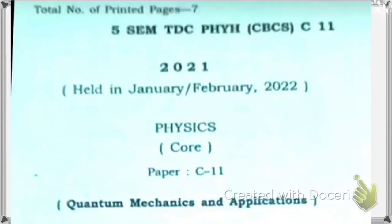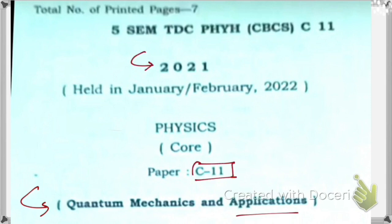Hello friends, today we're going to solve the Quick Quantum Mechanics and Application paper C11. This is the 2021 Physics Honors paper for the B5th semester students at De Broglie University.